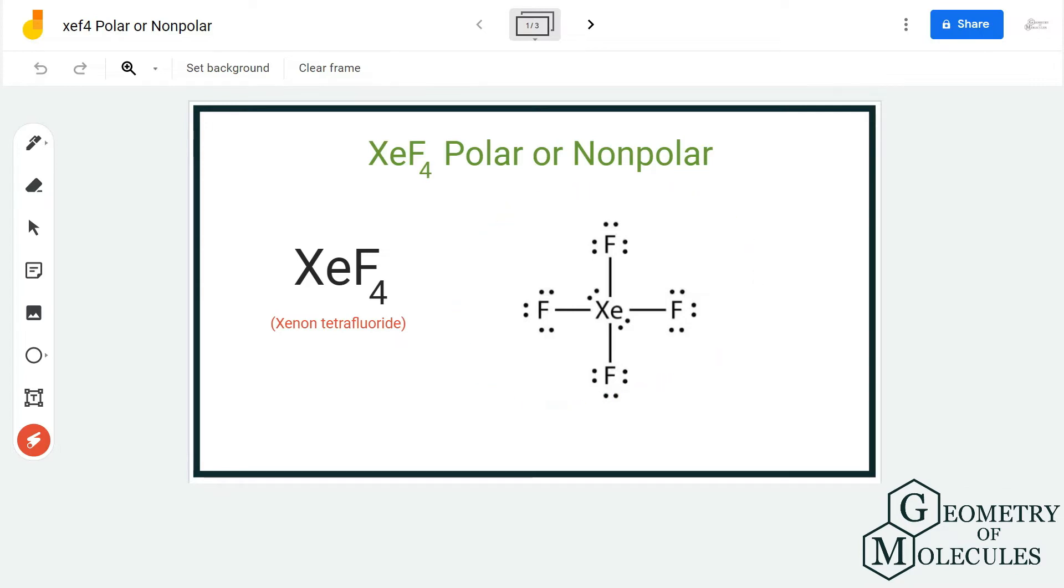We have xenon in the center with four fluorine atoms surrounding the xenon atom, and there are two lone pairs of electrons on the central atom.